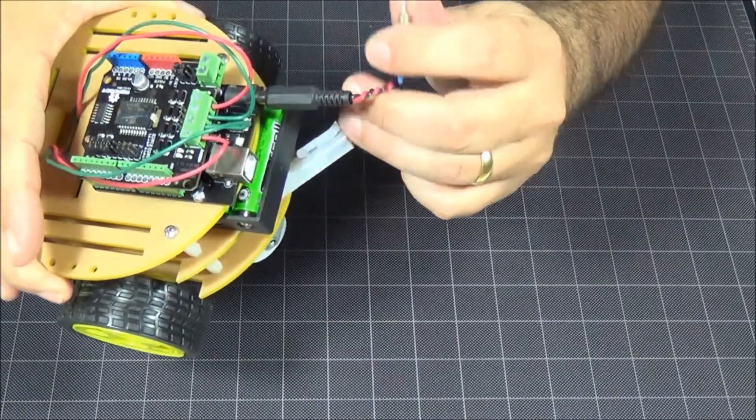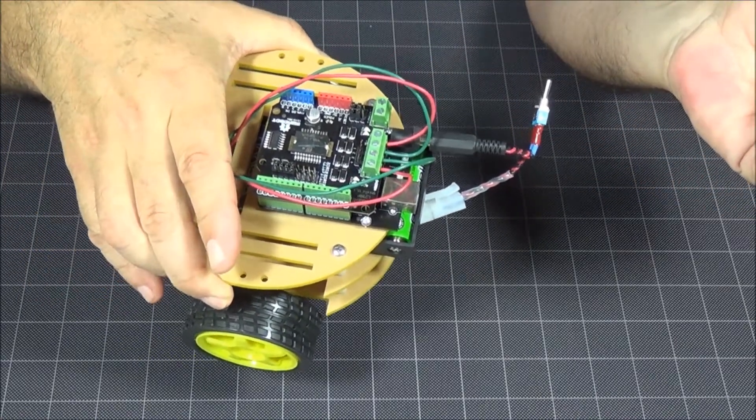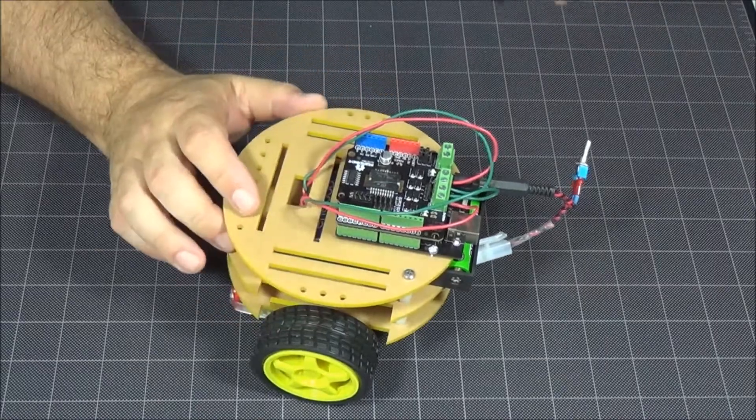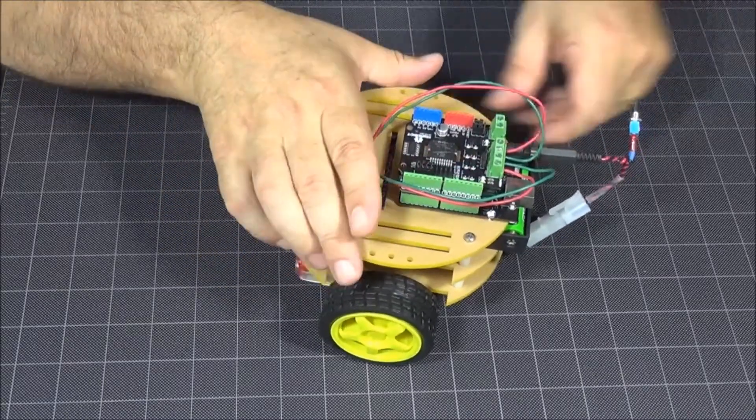So what's nice about the switch, you can turn it off easily when it starts rolling over the table. Let's try that again.